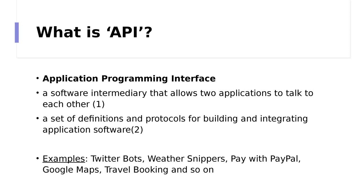So what exactly is an API? Here you should recollect the information you know about client-server architecture. When you use an application on your mobile phone, the application connects to the internet, sends data to a server, and the server then retrieves the data, interprets it, performs the necessary actions, and sends it back to your phone. The application then makes this data readable and understandable for you. And all this happens via API.